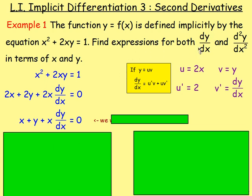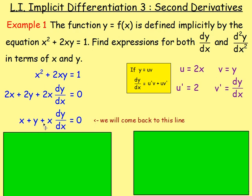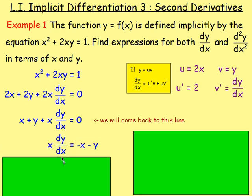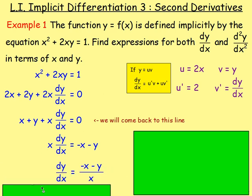We want to find expressions for both dy by dx and d2y by dx squared in terms of x and y, so we need dy by dx equals something. To get dy by dx on its own, undo anything we are adding or subtracting — subtract x from both sides, subtract y from both sides. That leaves us with just the x dy by dx term on the left-hand side. Then divide both sides by x. Therefore, dy by dx equals negative x take away y, divided by x. That is your expression for dy by dx.